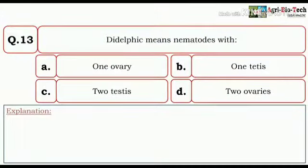Nematodes with, and the given options are one ovary, one testis, two testis, and two ovaries. So here the correct option would be two ovaries.